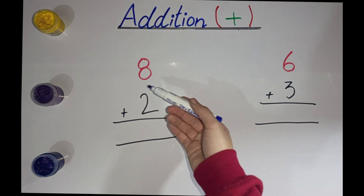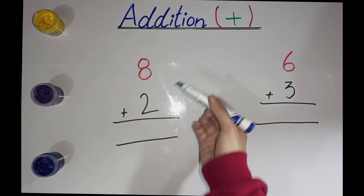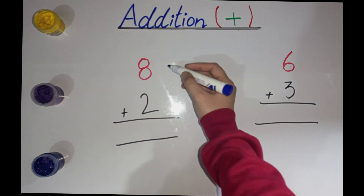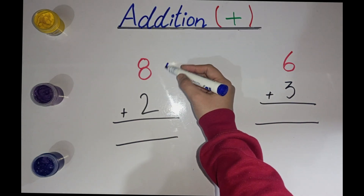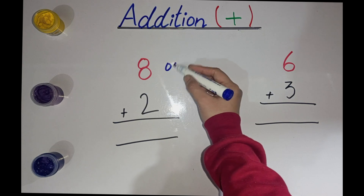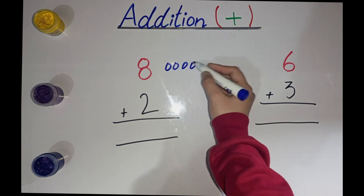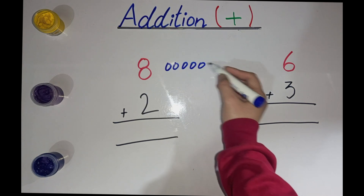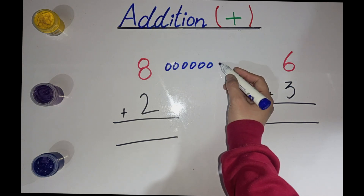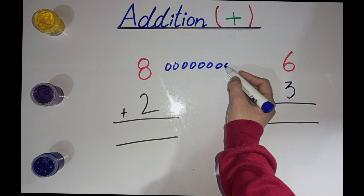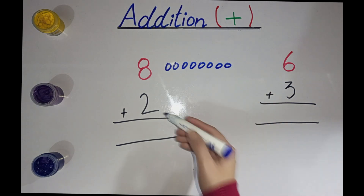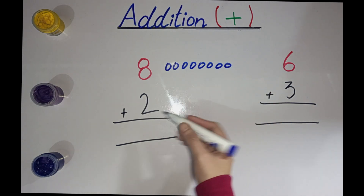What is this number? 8. Make 8 circles here. 1, 2, 3, 4, 5, 6, 7, 8. What is this number?